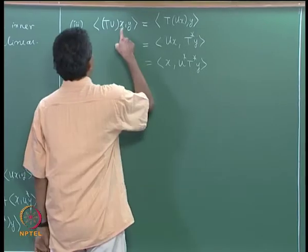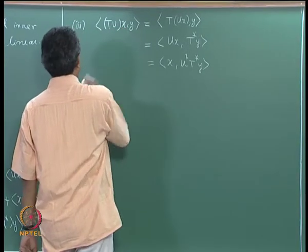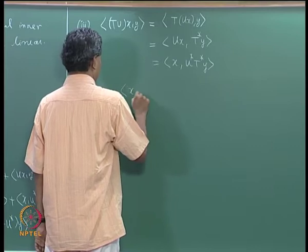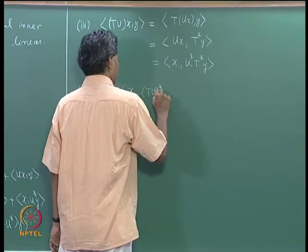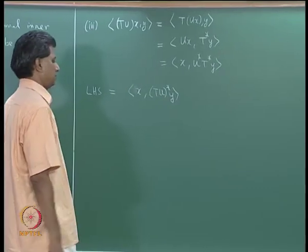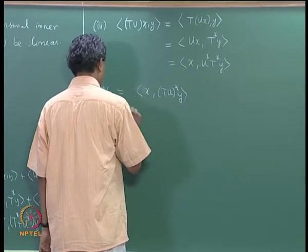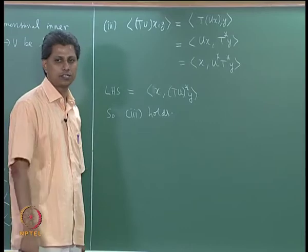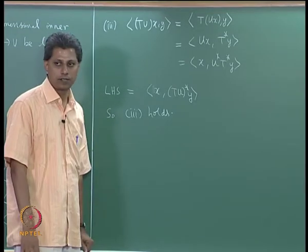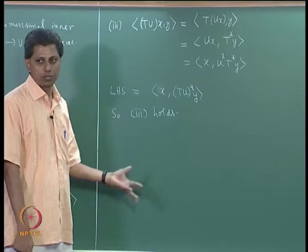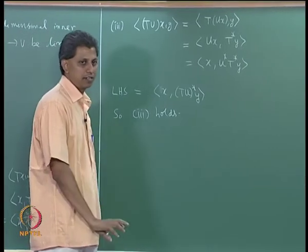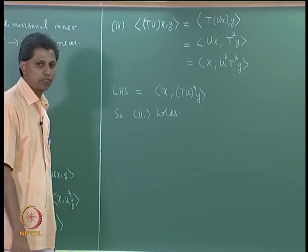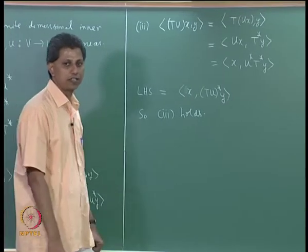The left-hand side is ⟨x, (TU)*y⟩, so we have shown that (TU)* = U*T*. This is called the reverse order law for the adjoint operation, similar to the reverse order law for the usual transpose of linear transformations, and similar to taking the conjugate transpose for complex matrices.